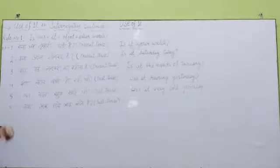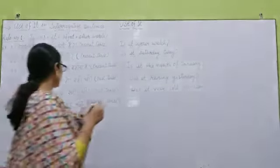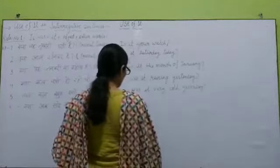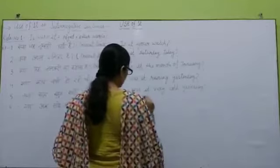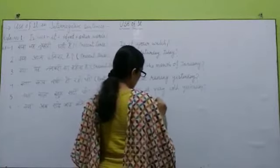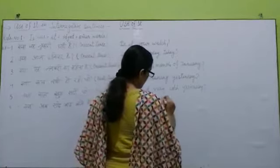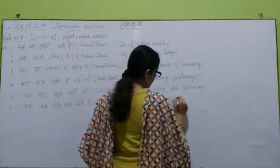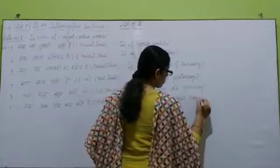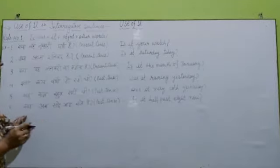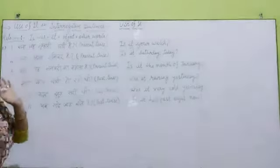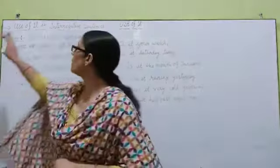क्या अब साड़े आठ बजे हैं? तो यहाँ present है, तो 'is' पहले आएगा. साड़े आठ को English में कहते हैं 'half past eight'. So the sentence becomes: Is it half past eight now? तो यह हमने देखा interrogative का first rule.